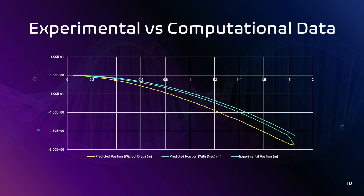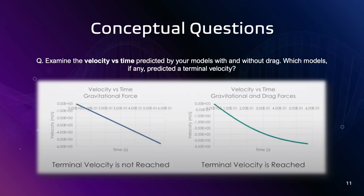Now, to answer some conceptual questions. If we were to examine the velocity versus time predicted by our models with and without drag, which models, if any, would predict a terminal velocity? In the graph of velocity versus time of an object under free fall, meaning it only experiences gravity, terminal velocity has not been reached since the slope of the graph is constant, therefore also meaning constant acceleration. However, terminal velocity may be reached in the second model, when gravitational acceleration is equal to the drag force which opposes the acceleration of the falling ball.